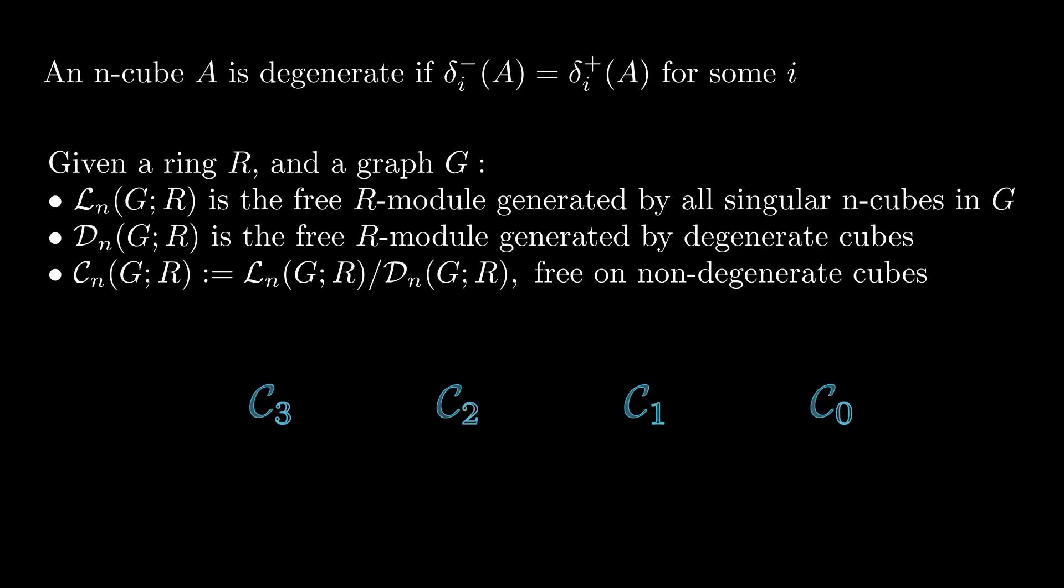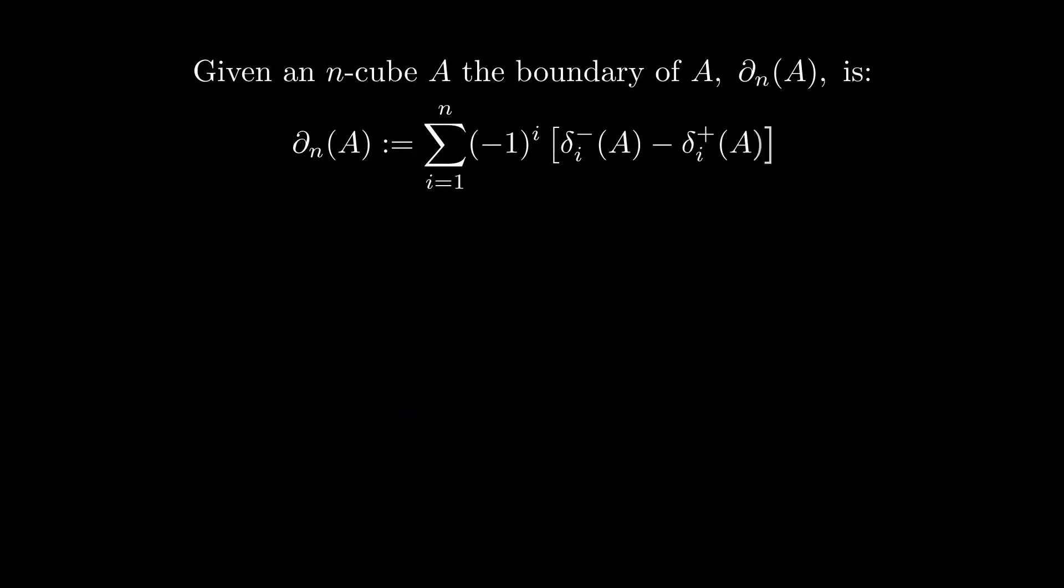We then have a bunch of r-modules in varying dimensions, and our goal is to be able to make this into a chain complex so we can take homology. Given an n-cube a, we define the boundary of a, which is del n a, to be this alternating sum from i equals 1 to n of the i-th negative and i-th positive faces. So for example, given this 2-cube here, its boundary is going to be this alternating sum of all the edges that make up this 2-cube.